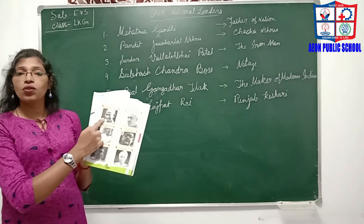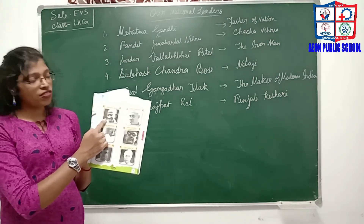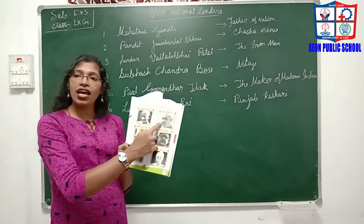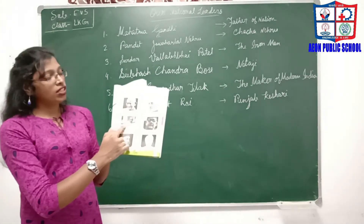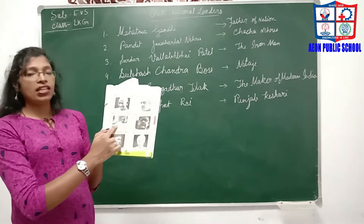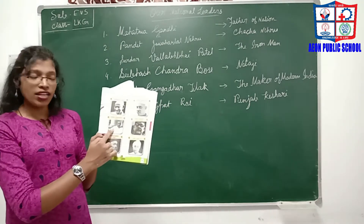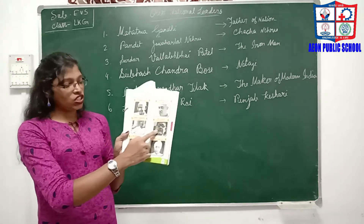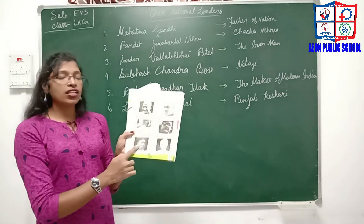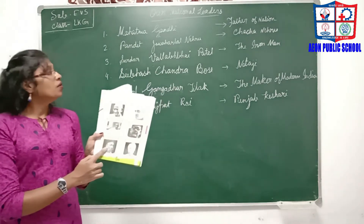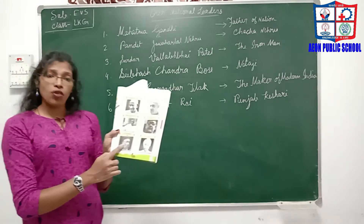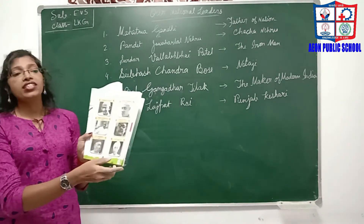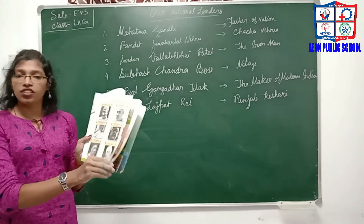So, Mahatma Gandhi is known as the Father of the Nation. Pandit Jawaharlal Nehru is known as Chacha Nehru. Sardar Vallabhbhai Patel is known as the Iron Man. Subhas Chandra Bose is known as Netaji. Barga Gadadila is known as the maker of modern India. And Lala Rajpat Rai is known as Punjab Kesari.